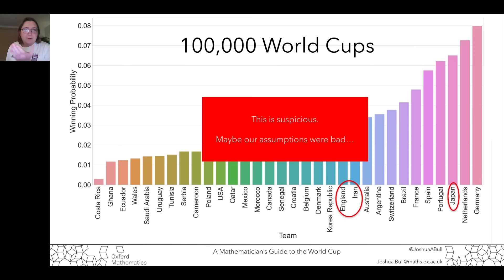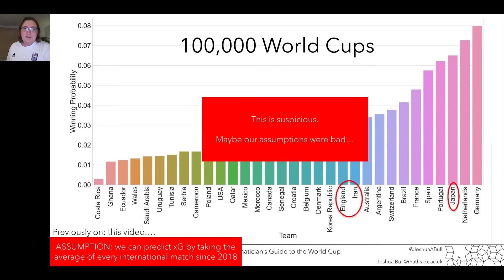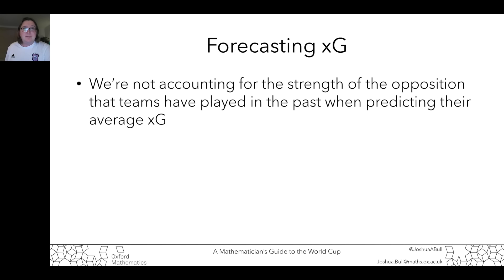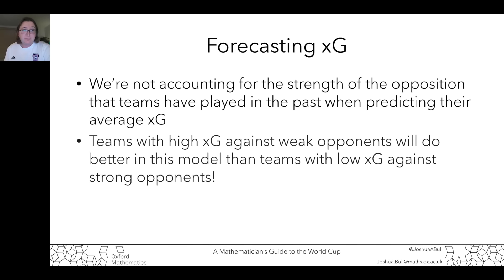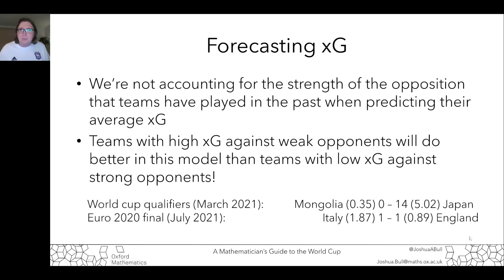This doesn't seem very likely. When our model is behaving in a way that's probably not realistic, that's a sign we're making bad assumptions. The assumption I'm going to look at is the idea that I can predict England's XG by just averaging what they scored in every previous international match over the last four years. The XG isn't just a property of a team — it's a property of who they're playing. If I'm playing against really strong opposition, I'll have a very low XG, whereas against very weak teams that don't defend well, I could have incredibly high XG despite not being a good team.